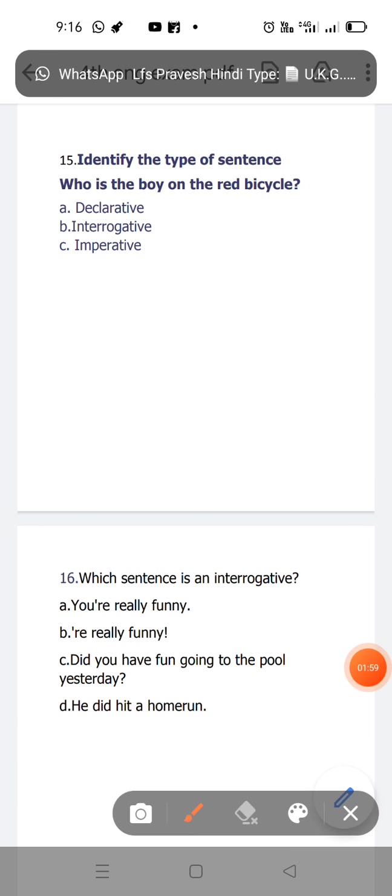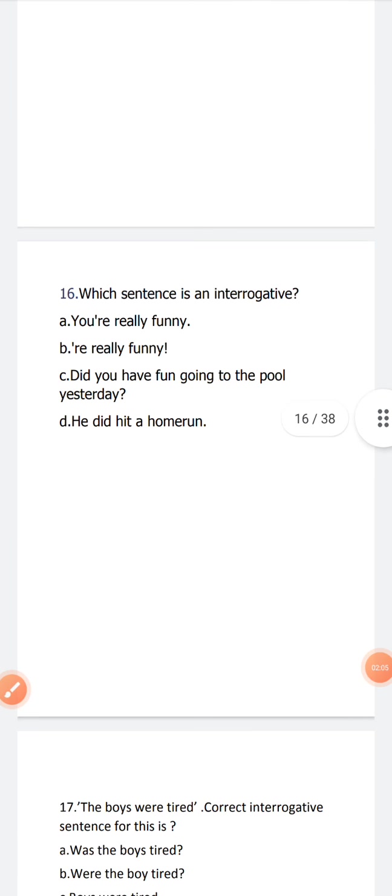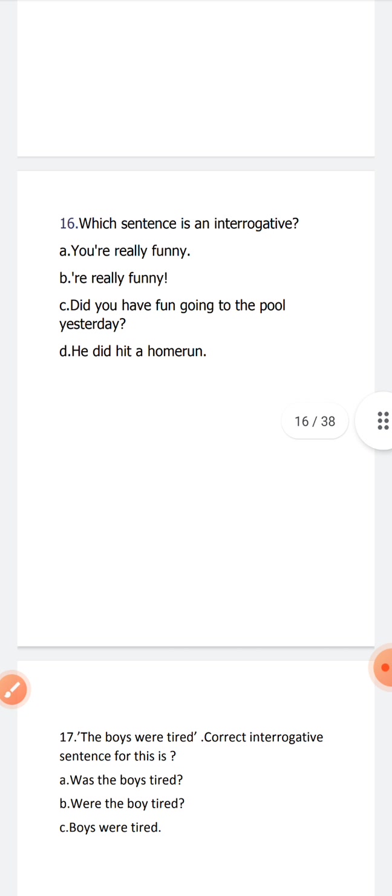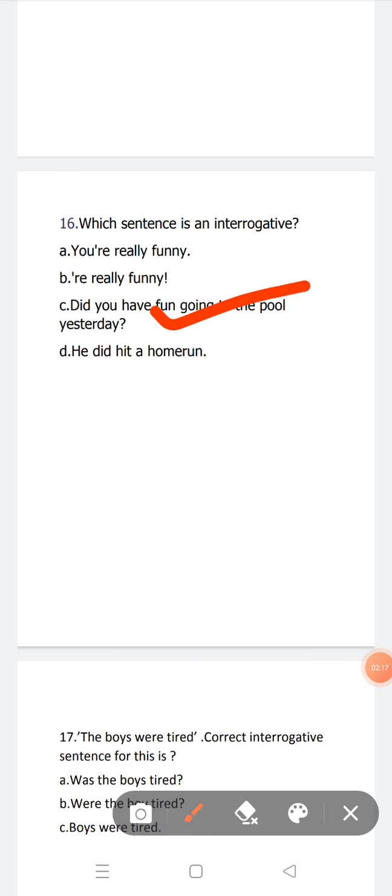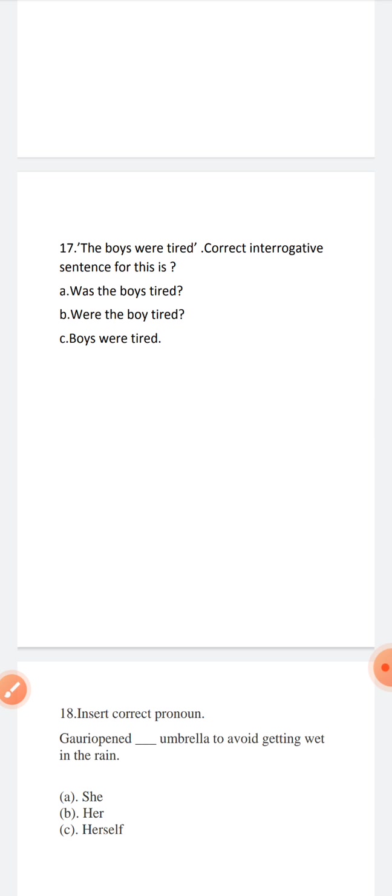Identify the type of sentence. Who is the boy on the red bicycle? The boy on the red bicycle—interrogative. Which sentence is interrogative? You are really funny. Are you really funny? Did you have fun going to the pool yesterday, or he did hit a harmonium? This one, did you have fun going to the pool yesterday.